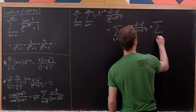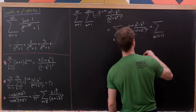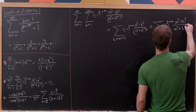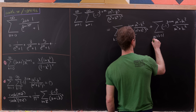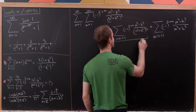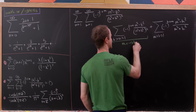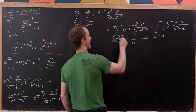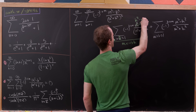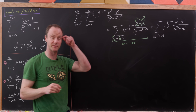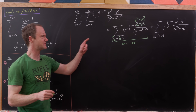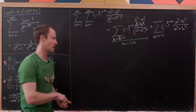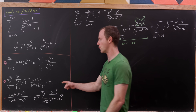For the case where m > k, we have plus the sum where k ≥ 1 and m > k of (−1)^(k+m) times (m²−k²)/(m²+k²)². I take the first sum and re-index it by swapping m and k. Swapping changes m²−k² to k²−m². Adding those two sums together, we get k²−m² + m²−k² = 0, so the whole double sum equals zero — which is exactly what we wanted.